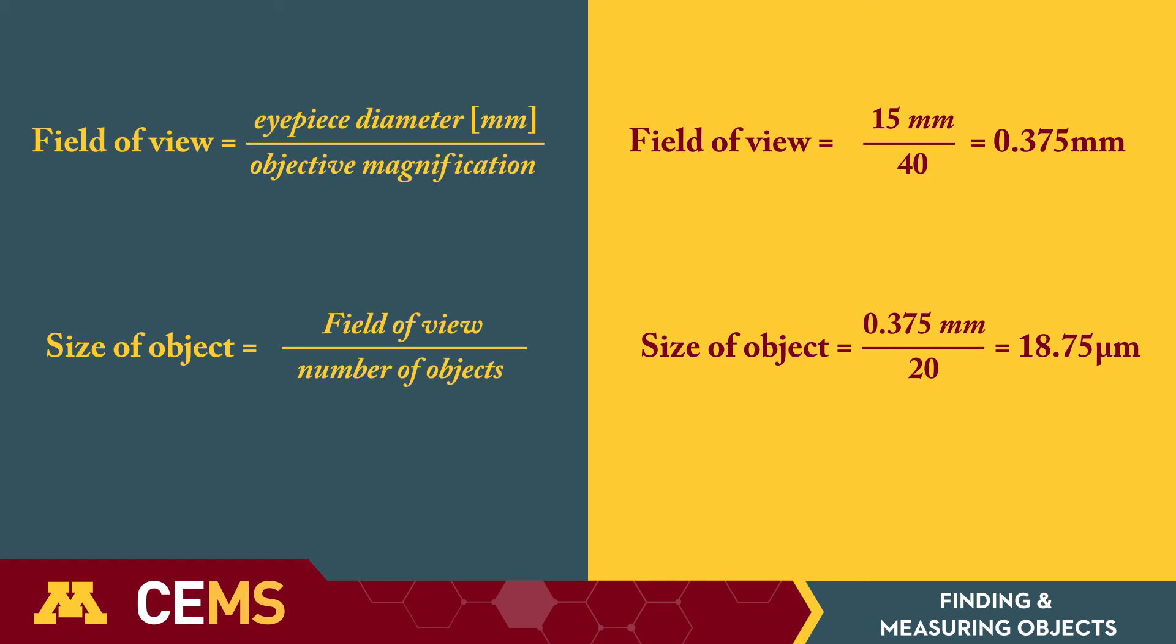I can then count about 20 root cells in my field of view. So dividing the field of view by the number of objects, the average root cell diameter is about 19 micrometers.